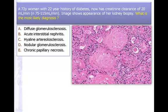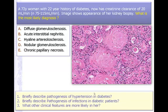72-year-old woman with a 22-year history of diabetes — long-standing. Creatinine clearance is markedly low at 20 ml. The kidney shows glomeruli replaced by diffuse glomerulosclerosis and markedly thick blood vessels — hyaline arteriolosclerosis — with narrowing. This is an end-stage kidney. The most likely diagnosis is diffuse glomerulosclerosis, also called end-stage kidney.